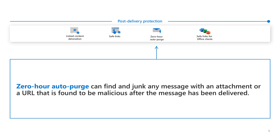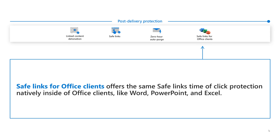Zero Hour Auto Purge can find and junk any message with an attachment or URL that is found to be malicious after the message has been delivered. Safe Links for Office clients offers the same Safe Links time-of-click protection natively inside Office clients like Word, PowerPoint, and Excel.